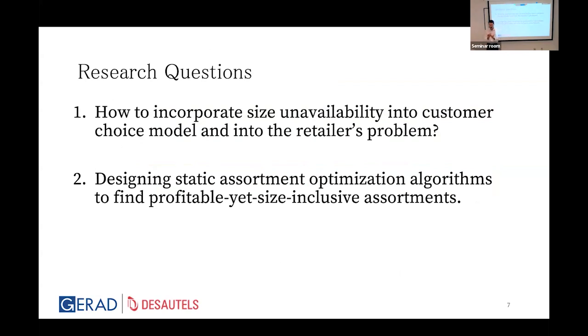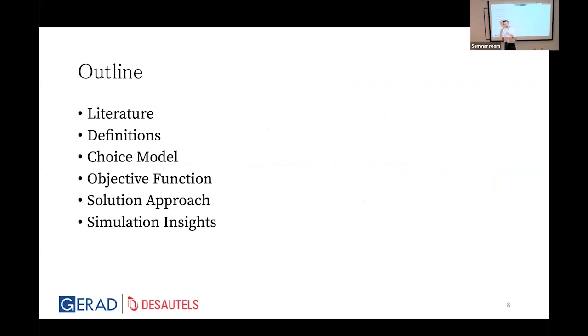We asked ourselves two questions. First, how can we incorporate this size unavailability issue into a customer choice model and into the retailer's problem? Second, how can we design static assortment optimization algorithms that find assortments which are profitable yet size inclusive?